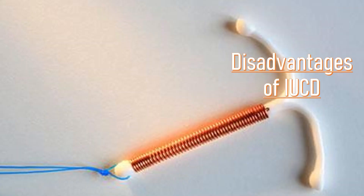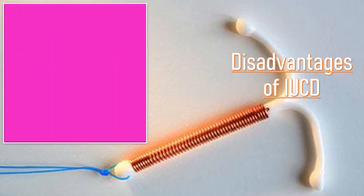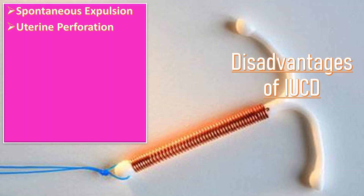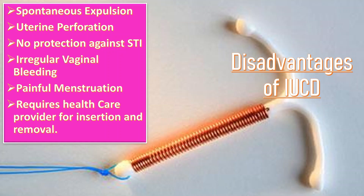The disadvantages of using IUCD: the first disadvantage is spontaneous expulsion. Next is uterine perforation. It has no protection against STIs. It causes irregular vaginal bleeding and painful menstruation, and it requires a healthcare provider for both insertion and removal.